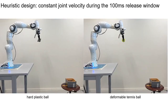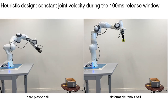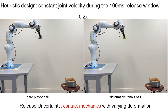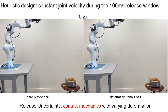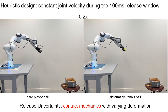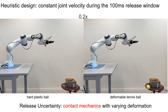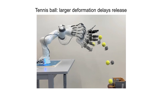As shown here, with the heuristic design of robot motion during the 100 ms release window, the same motion command to throw a hard plastic ball is not valid to throw a deformable tennis ball. At the macroscopic level, after giving the grip opening command, the deformed tennis ball gradually expands back to its original shape, possibly sliding along the contact surface before entering free-flying motion. As a result, larger deformation of the tennis ball delays the release, resulting in an inaccurate throw. Can we design the robot motion to be robust to release delay?